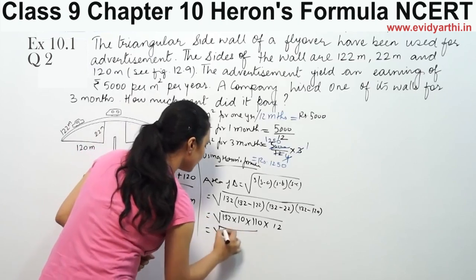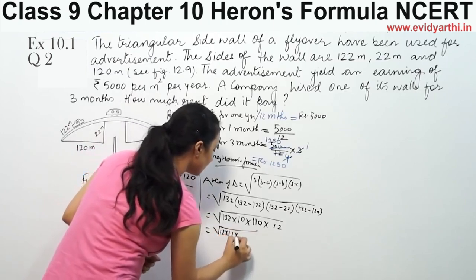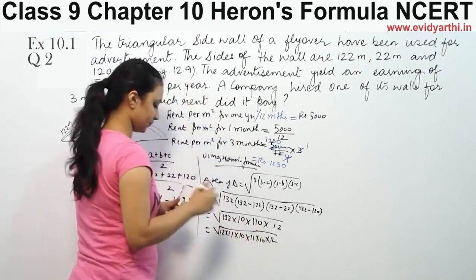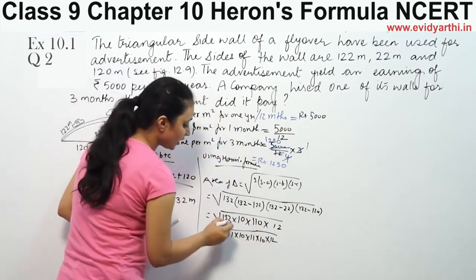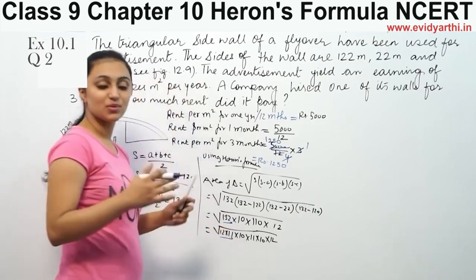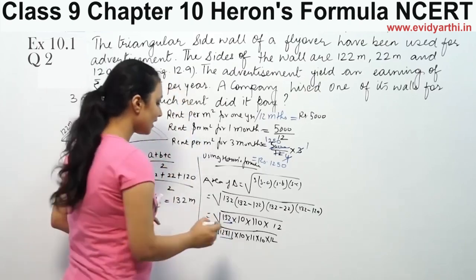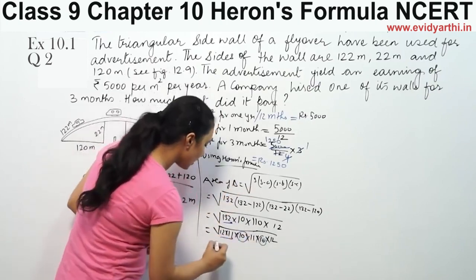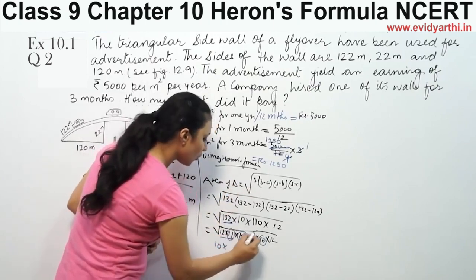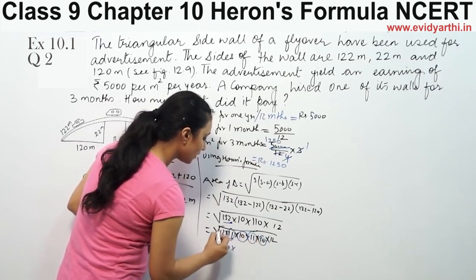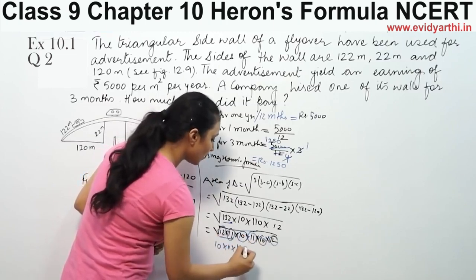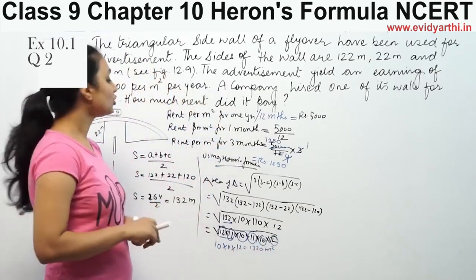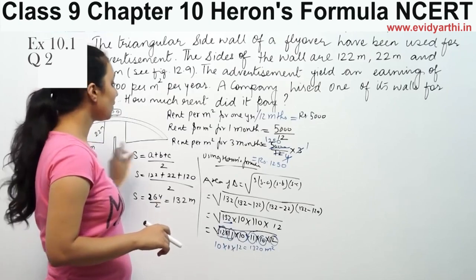To solve this, we break the numbers down. 132 can be written as 12 × 11. So we have 10 × 11 × 12 × 12 under the root. Pairing gives 12 × 12 and 10 × 11. Taking 12 outside the root gives 12 × √(1320), which simplifies to 1,320 square meters. This is the area of the triangular wall.